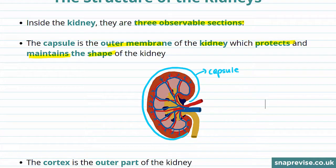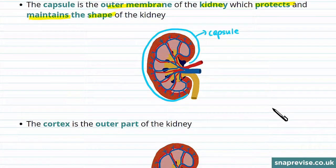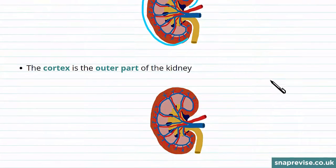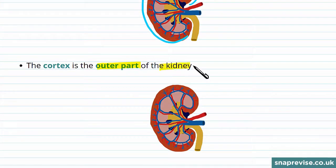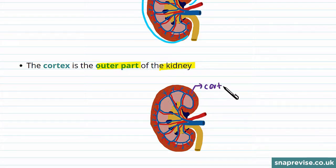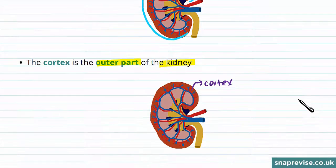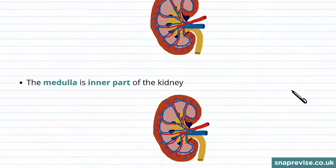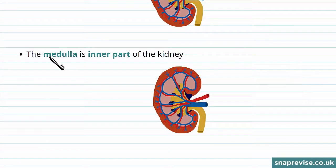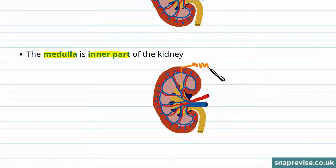The cortex is one of the three observable sections and it's the outer part of the kidney, shown here as a red layer. Another part of the kidney is the medulla, which is the inner part of the kidney, shown here.